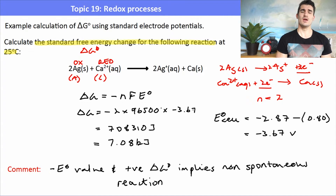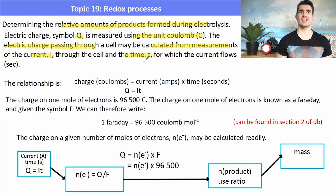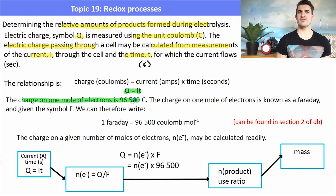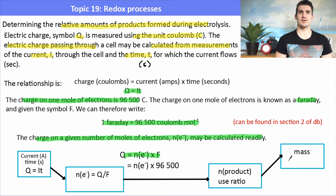We also need to determine the amounts of products formed during electrolysis. We calculate the charge in Coulombs using Q = It, where I is current in amps and t is time in seconds. Since one Faraday (96,500 C mol⁻¹) is the charge on one mole of electrons, we can calculate the moles of electrons transferred. The general steps are: use Q = It, find moles of electrons, use the mole ratio between electrons and the product, then find the mass.